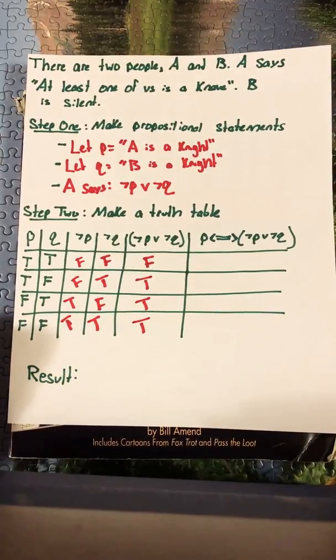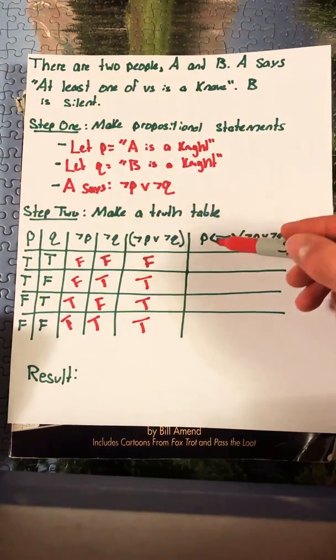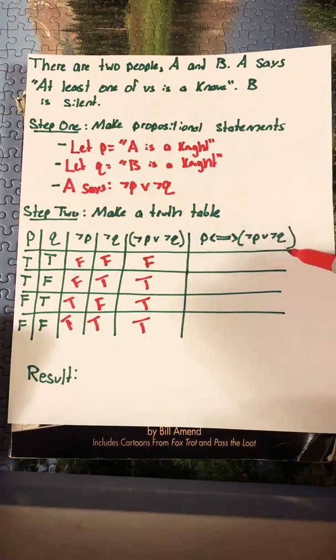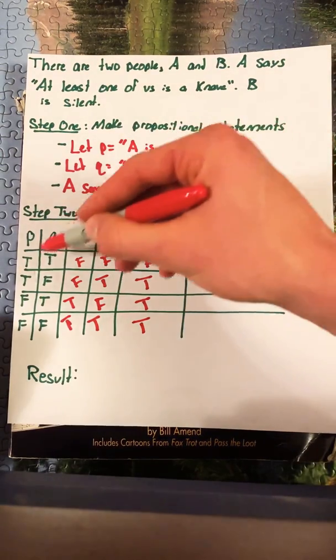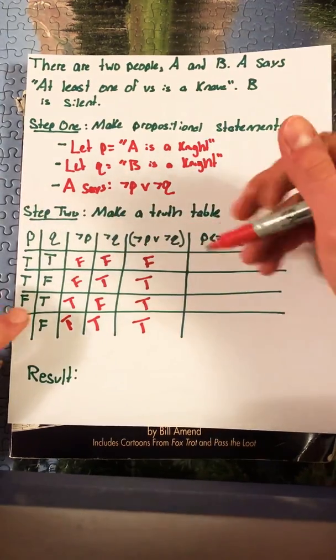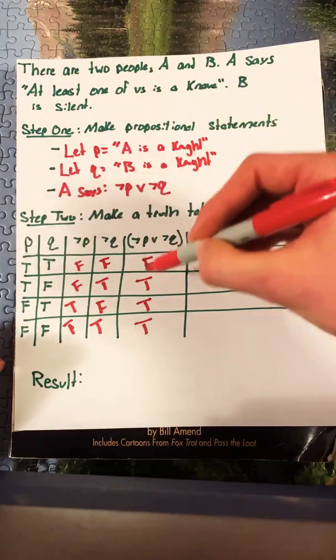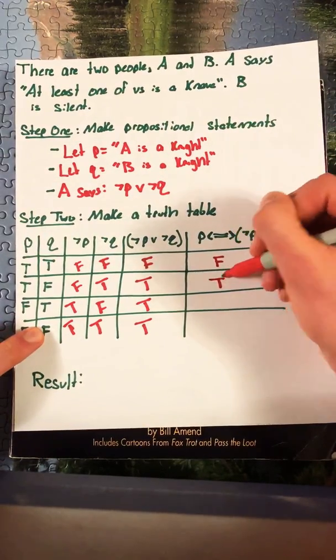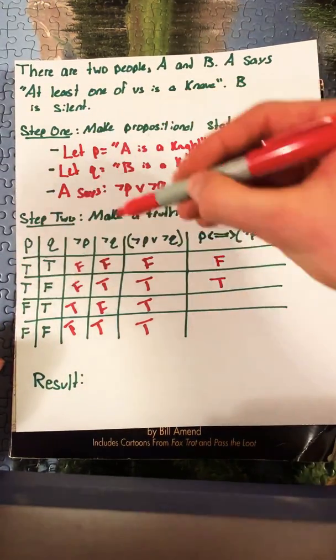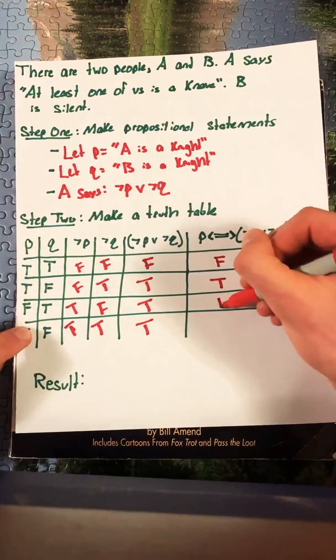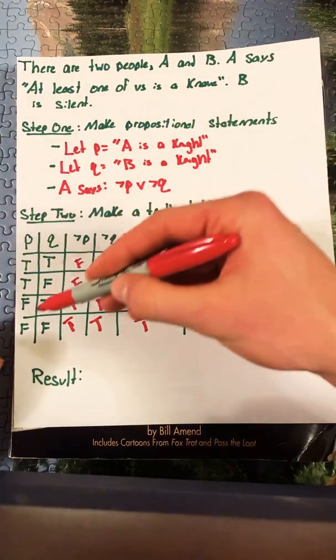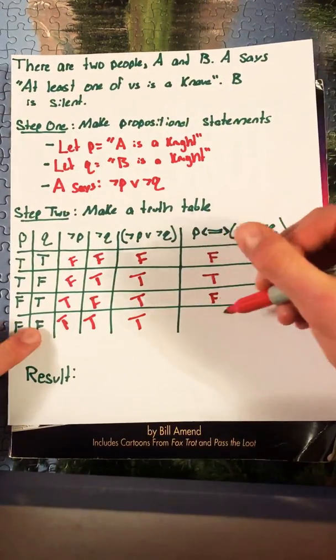Now for the biconditional we remember that this is true whenever it is two trues or two falses. We also want to make sure that we're looking at P and the statement not P or not Q. Here we see a true and a false. That gives us a false. Here we have a true and a true. That gives us a true. Here we have a false and a true. That will give us a false. And here we have a false and a true. That will also give us a false.